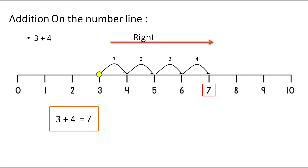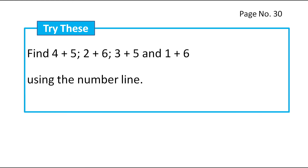As we reached on the number 7, the answer of 3 plus 4 is 7. On page number 30 from your textbook, you have the box called 'Try This'. In that box, they have given the questions: find 4 plus 5, 2 plus 6, 3 plus 5 and 1 plus 6 using the number line. So, let's find out one by one.